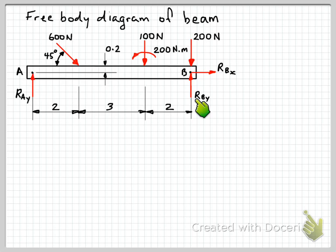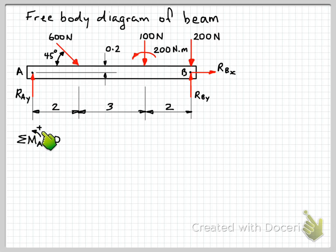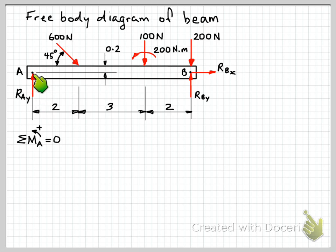If we take moments about point A the only unknown will be R_BY, and if we take moments about B the only unknown will be R_AY. In this problem I'm going to use moments about A, and it's important that we indicate in our equation where we're taking moments about. So sum of the moments about point A, with anti-clockwise positive. Starting at point A, R_AY has zero moment about point A because it passes through point A.